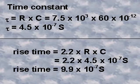Time constant equals the resistance times the capacitance, or 7.5 times 10 to the third times 60 times 10 to the minus 12, which equals 4.5 times 10 to the minus 7 seconds. Rise time equals 2.2 times resistance times capacitance, or 9.9 times 10 to the minus 7 seconds.